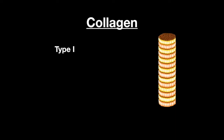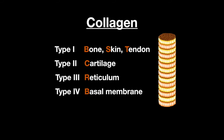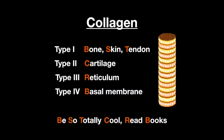There are four types of collagen. Type 1 makes up bone, skin, and tendon. Type 2 composes the cartilage. Type 3 makes up the reticulum, and type 4 makes up the basement membrane. The mnemonic is: Be So Totally Cool, Read Books.